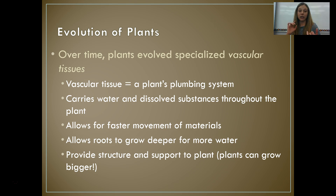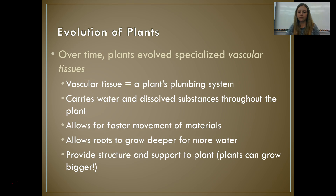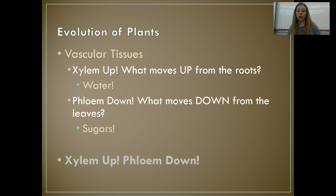Our two types of vascular tissues — the tissues used for transporting materials — are xylem and phloem. There's a phrase to remember: xylem up, phloem down. Xylem is the vascular tissue that moves materials up. Think about what would be going up in a plant — it would be coming from the bottom, which is where the roots are. What comes in through the roots? Water.